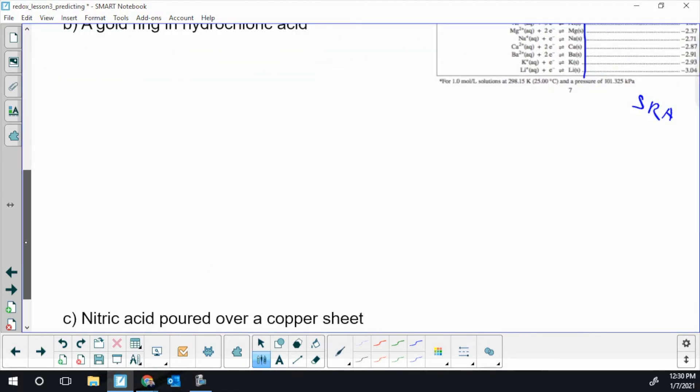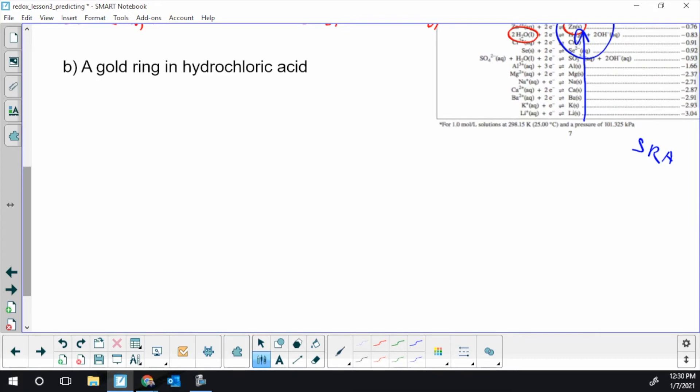Second example. What if I had a gold ring and I'm in the lab and I spill some acid on my gold ring? Am I in trouble or not? What is going to happen? So I'm going to run through the steps. I'm going to do it a little bit quicker this time. So gold ring. So that's just gold. It's not ionic. It's just gold.